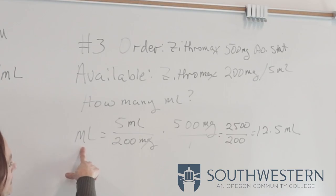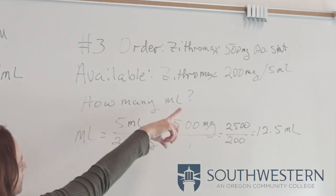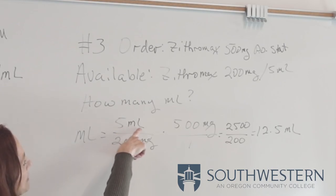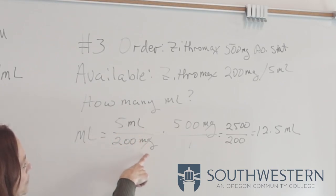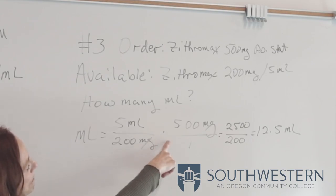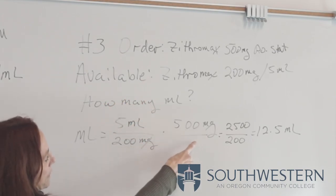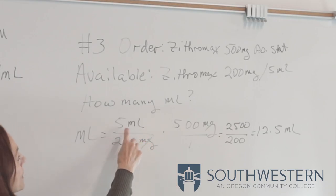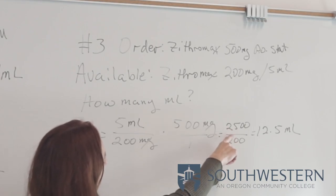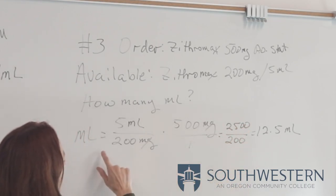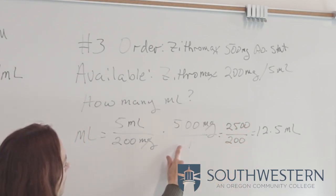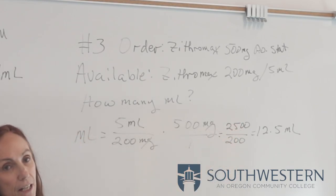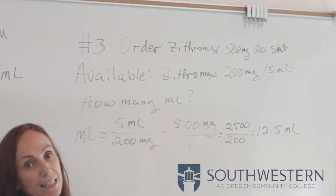Looking for milliliters equals: I go with what's available, putting 5 milliliters on top over 200 milligrams. I multiply by my order of 500 milligrams over 1 as a placeholder. Multiply across: 5 times 500 equals 2,500, and 200 times 1 equals 200. Divide 200 into 2,500 and I get 12.5 milliliters.